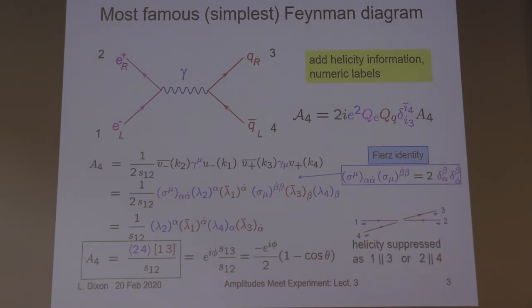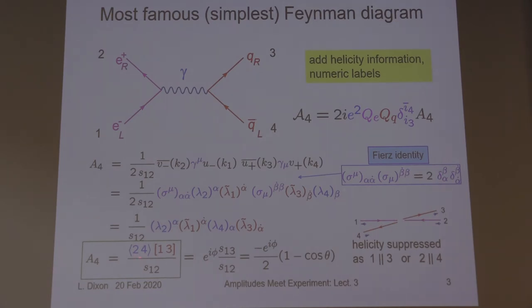Let's write it a little bit differently. In the numerator, that was the square root of S_{13}. But by momentum conservation, S_{13} is the same as S_{24}, because K_1 + K_3 = −K_2 − K_4. So this thing is also the square root of S_{13}. We take the product of two of them and we get S_{13} up to some phase. So we get an S_{13} over an S_{12}.